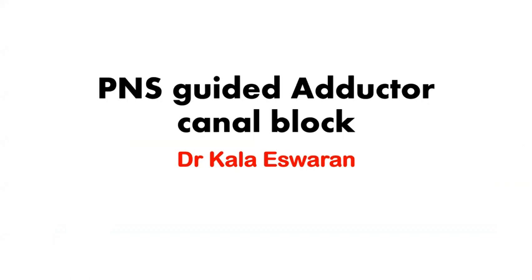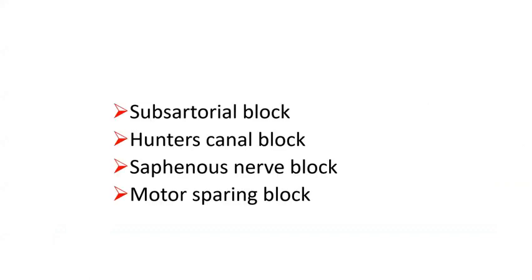Hi friends, today we learn about PNS guided adductor canal block. The adductor canal is also called the sub-sartorial block because the sartorius muscle forms the roof of the adductor canal, or Hunter's canal after John Hunter who first described the exposure and ligation of the femoral artery, or the saphenous nerve block, because after giving muscular branches the femoral nerve continues as the saphenous nerve which lies in the adductor canal — hence it's also called the motor sparing block.